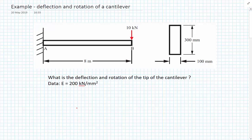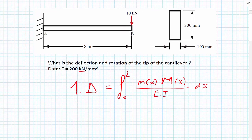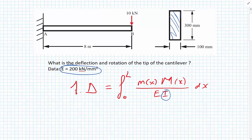Before we proceed any further, it's useful to remind ourselves of the formula developed in the previous video for the deflection of the cantilever. We had 1·δ equals the integral over the length of the beam of the moment function due to a unit load, multiplied by the moment function due to the real load, divided by EI, all integrated over dx. We're given E as 200 kilonewtons per millimetre squared, and we need to calculate the I value and the two moment functions.